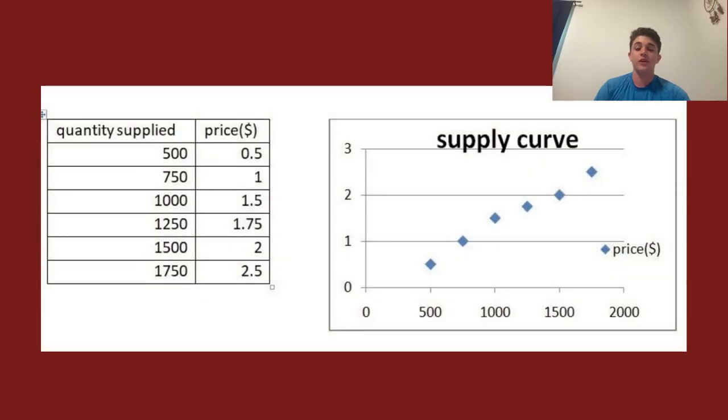Moving on, we have the supply curve of Coca-Cola, and like its demand curve counterpart, we can see that the supply curve is also that of a normal good, which slopes upward from left to right.